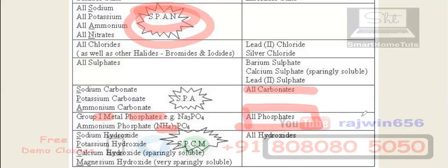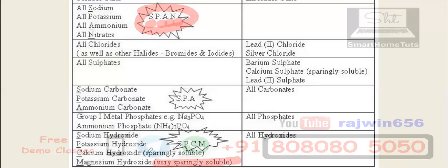Then we are coming to hydroxides. Again, we are applying the same thing: SPAN. Sodium, potassium, ammonium will be soluble, and magnesium hydroxide is very sparingly soluble, even this calcium hydroxide as well. Rest all hydroxides are going to be insoluble.